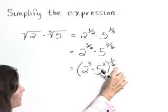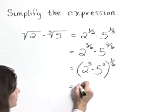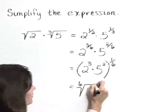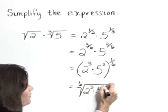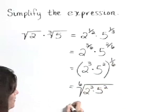Now that one-sixth is a sixth root. So we can write this as the sixth root of 2 to the third times 5 squared. We've got them under the same radical.